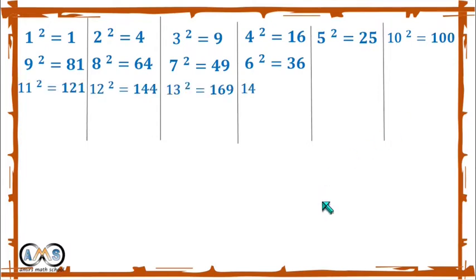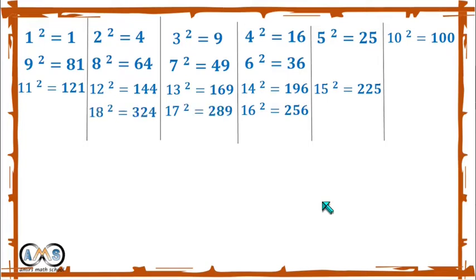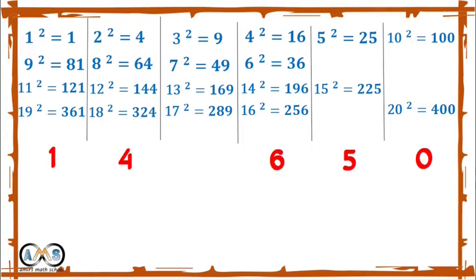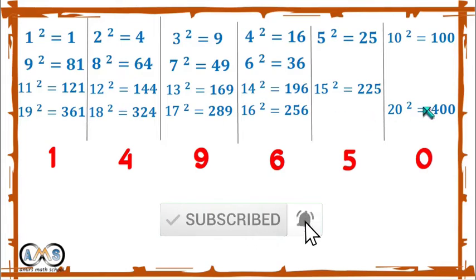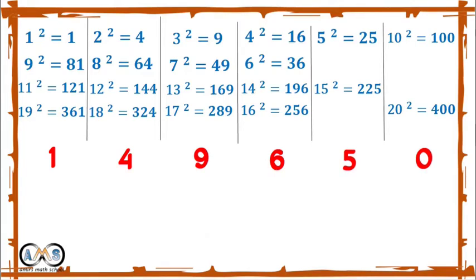If we take squares up to 20, all the square numbers will be classified among six groups — that is, ending with 0, 1, 4, 5, 6, or 9. That is, perfect square numbers end with 0, 1, 4, 5, 6, or 9.